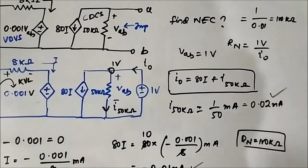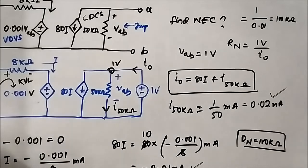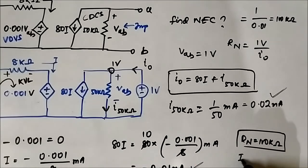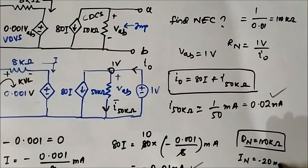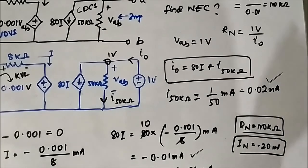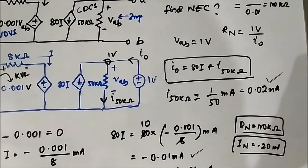So RN is 100 kilo-ohm. We have got both results: IN is minus 20 milliampere and RN is 100 kilo-ohm. This is the fifth question.